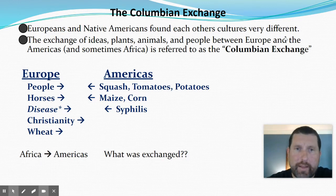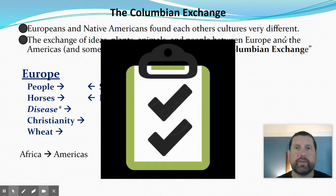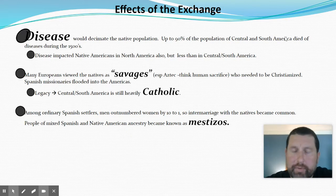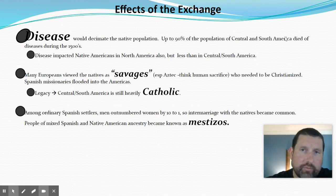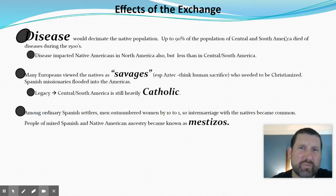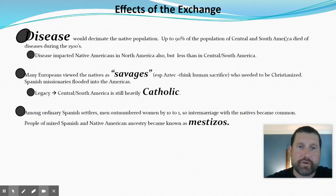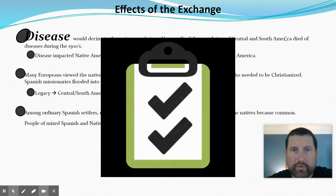We talked about the Columbian Exchange the other day, so we need to know what that means and, most importantly, the effects of the exchange on the peoples of this continent — 85 to 90% of populations in certain instances in Central and South America decimated by disease, particularly smallpox and measles. We talked about those three Gs, the motivating factors, and certainly many Europeans viewed the natives as savages who needed to be Christianized, largely through the Catholic Church in the Southern Hemisphere. We also talked about the creation of a whole new race of people with the mestizos and mulattos.